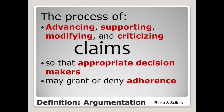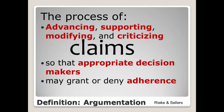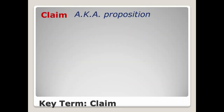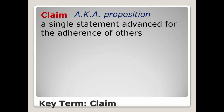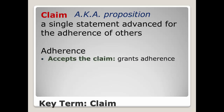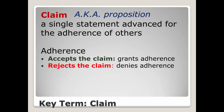You'll notice that the central term in this definition is claims. A claim, also known as a proposition, can be considered a single statement that is advanced for the adherence of others. Argumentation always has an audience, which includes one or more persons who are capable of being influenced or persuaded and, as a result, may accept or reject the claim or the argument. If the audience accepts the claim, we say they grant adherence. If they reject the claim, then they deny adherence. So a claim is a single statement advanced or set forth for others to accept or reject.